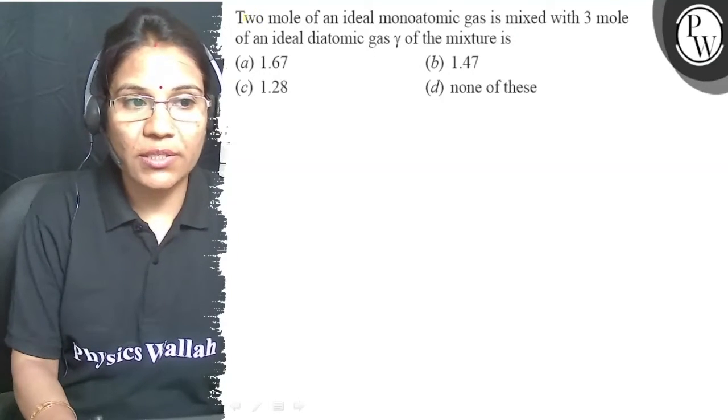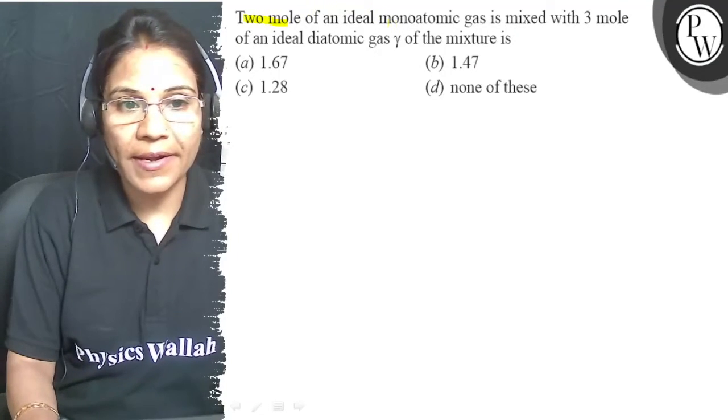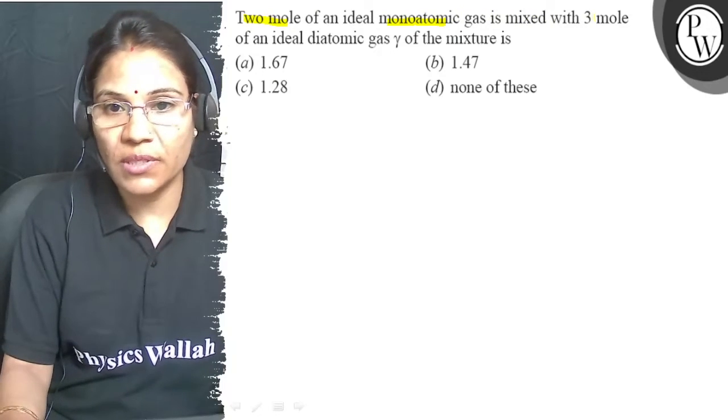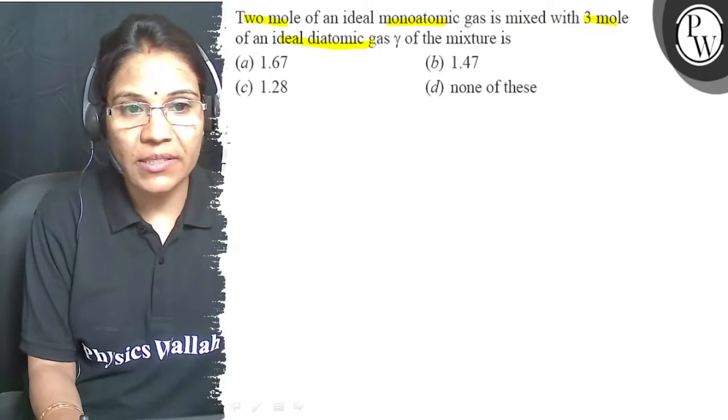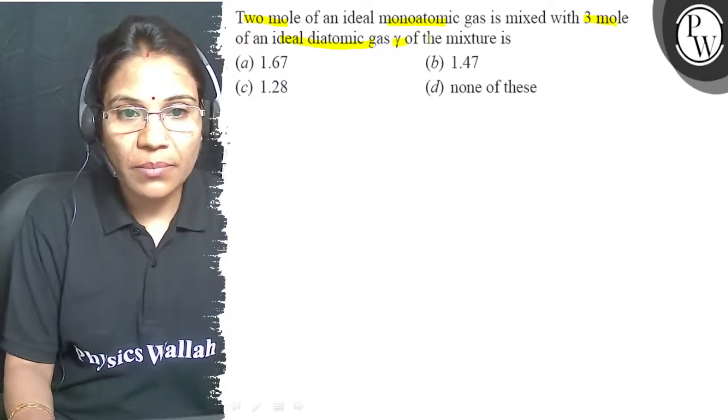Hello, let's see this question. This question says, 2 mol of an ideal monoatomic gas is mixed with 3 mol of an ideal diatomic gas. Gamma of the mixture is.